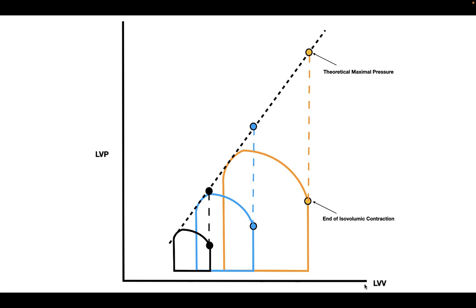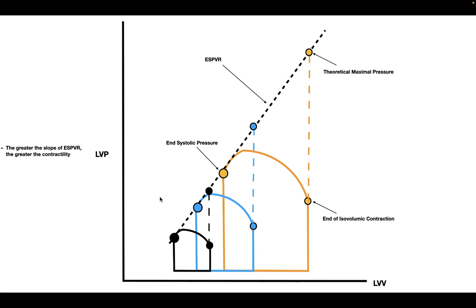It's important to realize we couldn't do this experiment in a real human, because keeping the aortic valve closed would prevent blood from reaching the brain and organs, which would be fatal. Instead, we can use the end systolic pressure at different EDVs from multiple curves, and these points align with the same relationship line. This is why this line is called the ESPVR, or end systolic pressure volume relationship, and it serves as a measure of contractility. The greater the slope of this line, the greater the contractility.